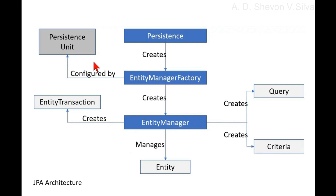A persistent unit defines a set of all entity classes that are managed by entity manager instances in an application. This set of entity classes represents the data contained within a single data store. Persistent units are defined by the persistence.xml configuration file. JPA uses the persistence.xml file to create a connection, keep the connection, and set up the required environment.